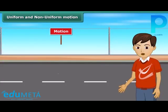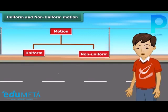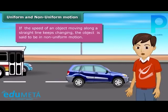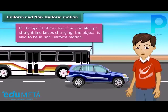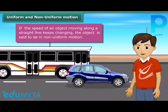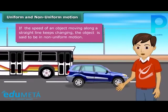Motion can be classified as uniform or non-uniform depending on the speed of an object. If the speed of an object moving along a straight line keeps changing, its motion is said to be non-uniform.